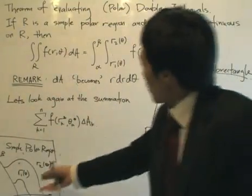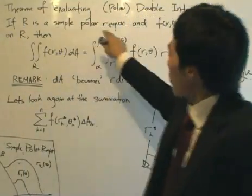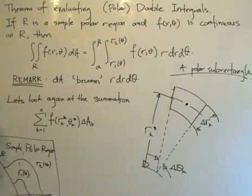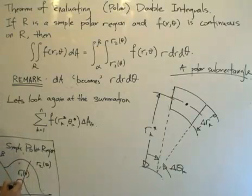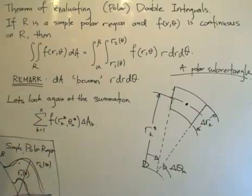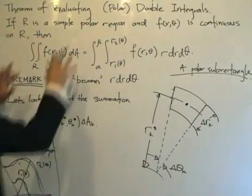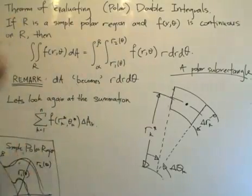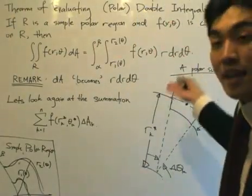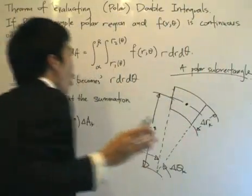When we have a double integral over region R, and R is a simple polar region as stated in the conditions, we extend the line segment: r₁(θ) is always less than r₂(θ), which is always the case. Then α and β are the angular bounds. So this is the region R and these values go into the integral. If R is a simple region and f is continuous, the proper calculations follow.